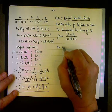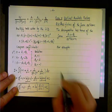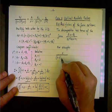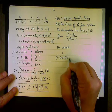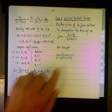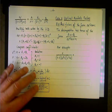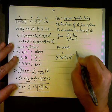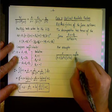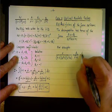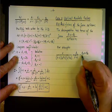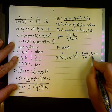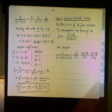For example, if we need to decompose something like x over (x − 2)(x² + 1)(x² + 4), notice that x² + 1 is a prime quadratic — it cannot be factored — and so is x² + 4. So we have a linear factor and two quadratic factors, and we break it down as A1/(x − 2) + (A2x + B2)/(x² + 1) + (A3x + B3)/(x² + 4). That will be the decomposition.